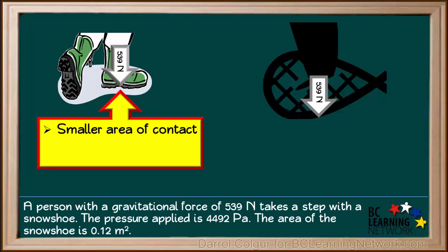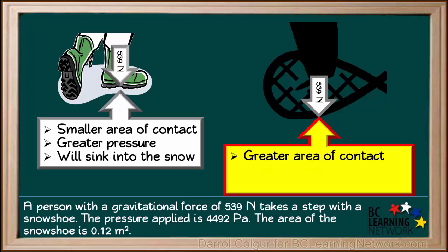To summarize, we saw that the boot has a smaller area of contact which results in a greater pressure. So the boot will likely sink into the snow. The snowshoe has a greater area of contact which results in a lower pressure. Therefore, the snowshoe will not sink into the snow as much as the boot did. This is how snowshoes work.